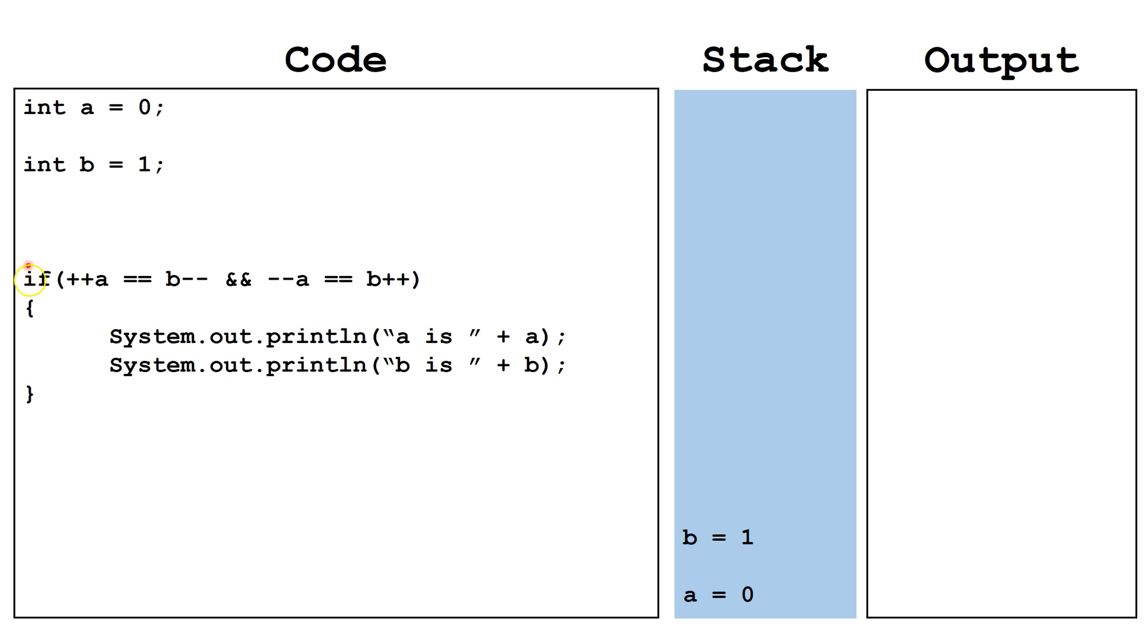These two comparisons have to be treated separately. We start by incrementing a, which becomes one. We do not decrement b at this point until this entire expression is evaluated. So now we are checking: does one equal one? That evaluates to true. Now that we have completed evaluating this expression, b decrements by one. So now b decrements down to zero.